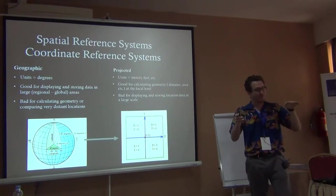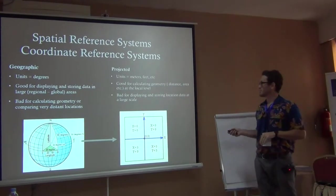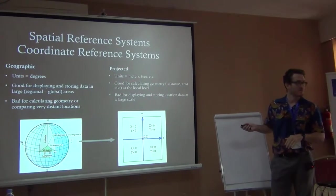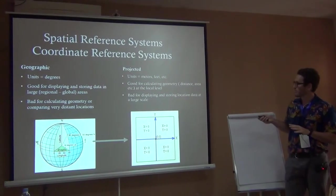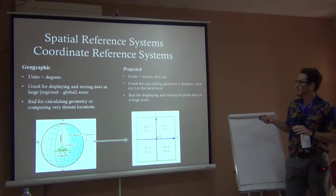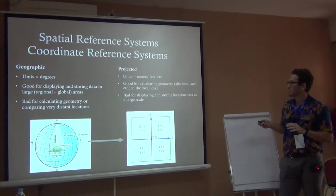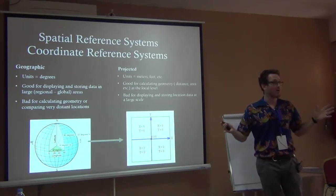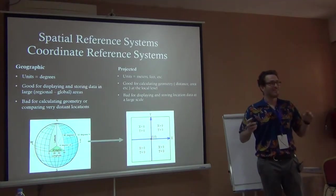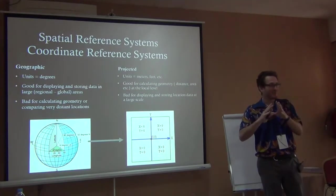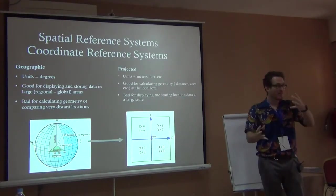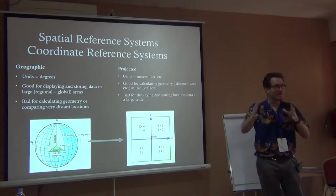We have to translate that curved surface into a two-dimensional surface, which is why we use projected coordinate reference systems. These are good for calculating geometries, but they're bad for displaying and storing location data at large scale, because you can't take a two-dimensional surface and put it onto a three-dimensional surface without changing some aspect of the geometry.